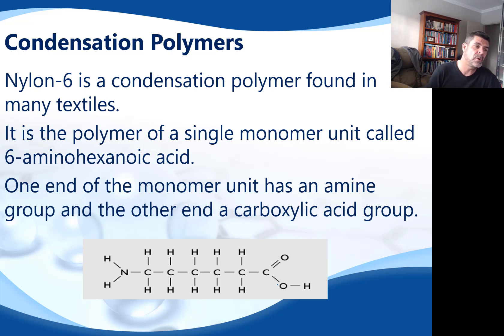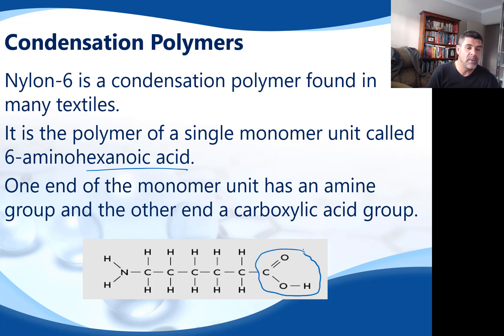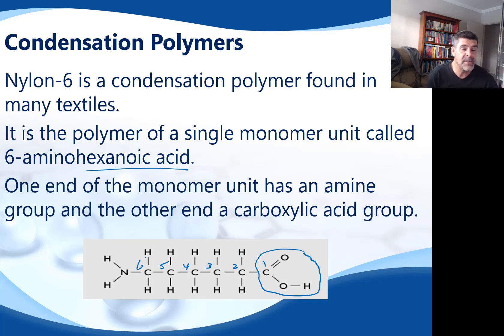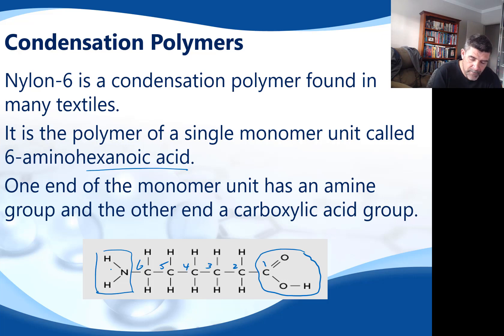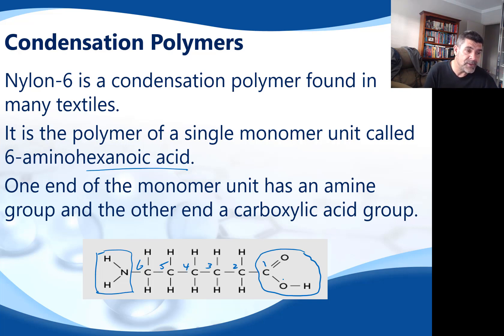One type of nylon is the polymer of a single monomer unit called 6-aminohexanoic acid. The hexanoic acid is the dominant functional group — it takes the number one carbon, which is our carboxylic acid. Because it's hex, there are 6 carbons in the chain. The 6-amino tells us the NH₂ group is our amine group. Because the acid takes preference in naming, we just describe the amino group at the other end. So this is an example of a type of amino acid.